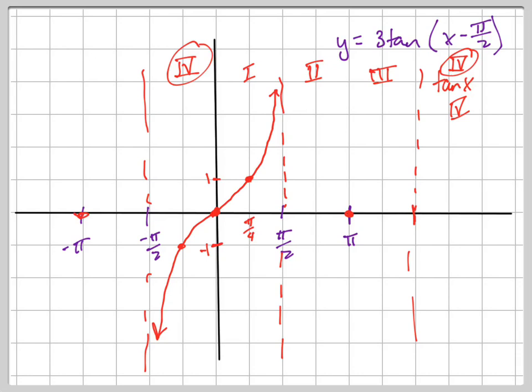So that's your base graph — the red graph is the base. Now for the purple graph, what have I done differently? That 3 just stretches it — it multiplies everything by 3. And the minus pi over 2 shifts everything to the right by pi over 2. So my asymptotes will all shift to the right pi over 2 — instead of being at negative pi over 2, it's going to be at 0; instead of being at positive pi over 2, it's going to be at pi.